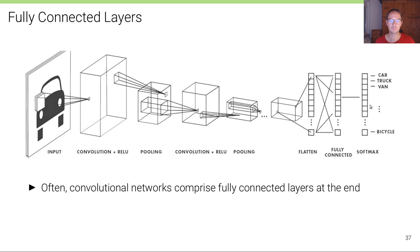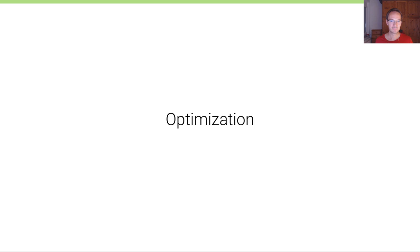Convolutional networks typically end with a few fully connected layers after flattening the spatial dimensions to one vector, applying standard MLP layers to arrive at the final decision. That's a CNN in a nutshell.